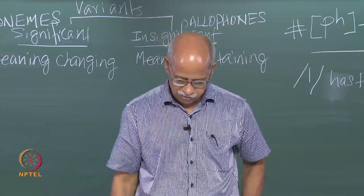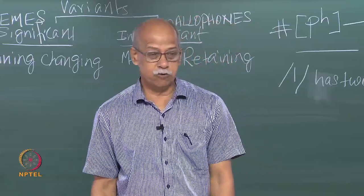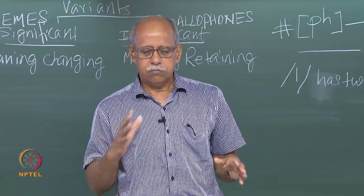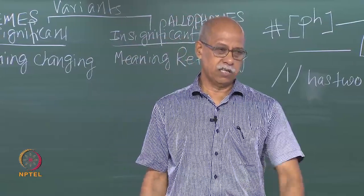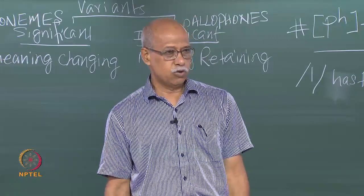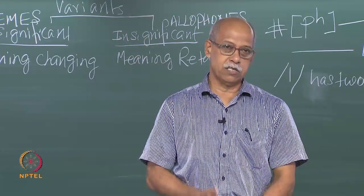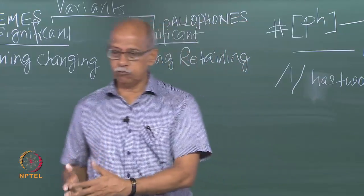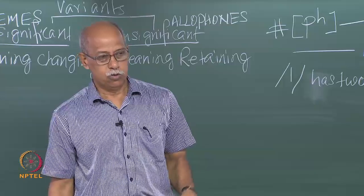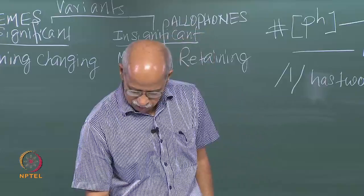Let us do some exercise. In all languages there are consonantal phonemes and vowel phonemes. Standard British English has 24 consonantal phonemes — American English has fewer, London English has fewer. How many does your language have? That can be a good term paper: you can study vowel phonemes in Telugu, consonant phonemes in Telugu, or only plosives or fricatives in Telugu, Hindi, Maithili, or any other language.